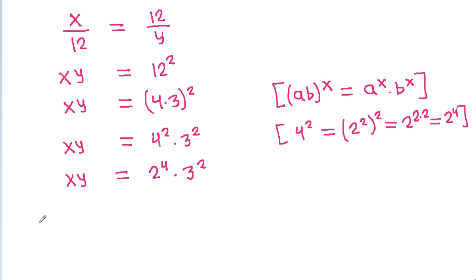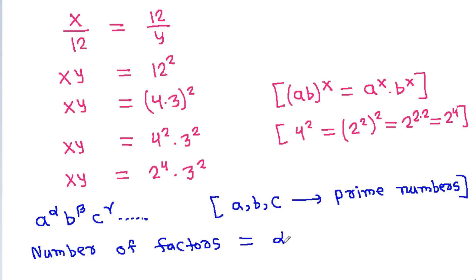For a number of the form a^α × b^β × c^γ where a, b, c are prime numbers, the number of factors equals (α+1)(β+1)(γ+1).